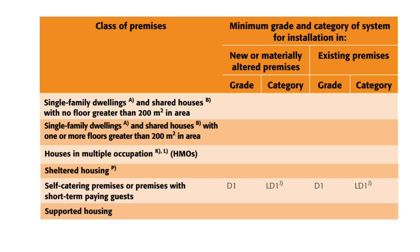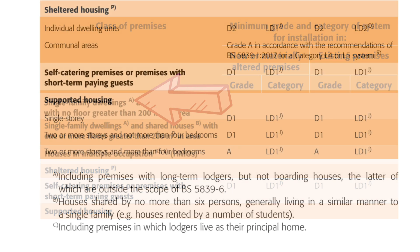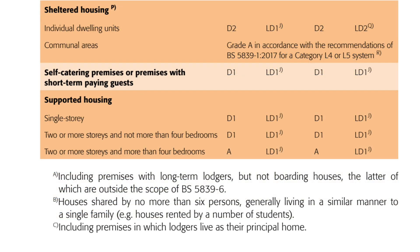One of the keys to really understanding the information in this table is found by consulting the notes that go along with it. For example, you may be wondering what's meant by a single-family dwelling, and if a family takes in a lodger, does that then become a shared house? Well, single-family dwellings has a note A, which directs us to note A at the bottom of the table. That note reads: 'Including premises with long-term lodgers, but not boarding houses, the latter of which are outside the scope of BS5839-6.'